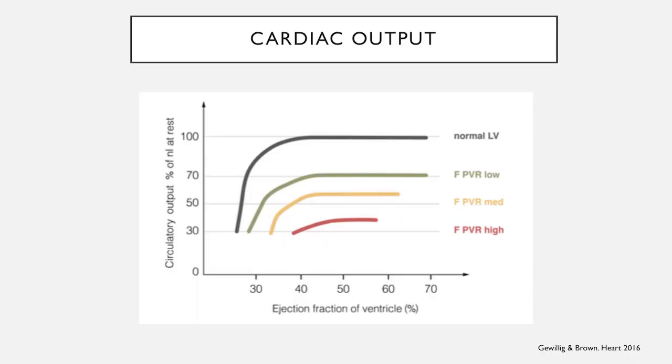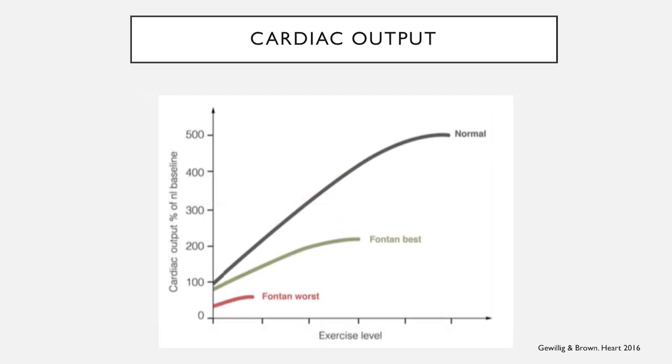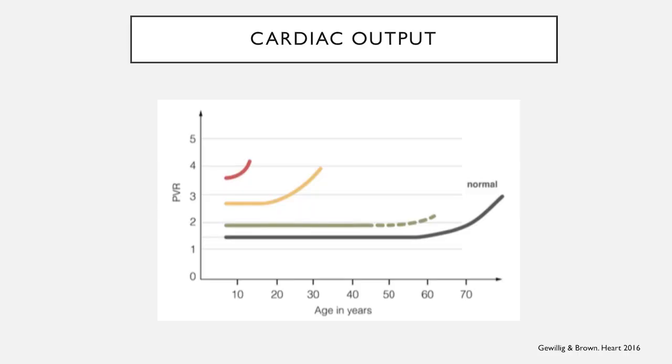PVR is clearly very important. There's a series of charts by Mark Gavillig showing what cardiac output at rest would look like for various degrees of ejection fractions, demonstrating how important PVR is in the Fontan circulation. A good Fontan may be able to improve their cardiac output by twofold during exercise, compared to a normal of five. The key theme in exceptional cases is a lifelong commitment to exercise. I saw two ladies in clinic last week with the same diagnosis — one whose mother was a personal trainer had a VO2 of 87% predicted and the other had 63%, simply because the mother insisted on keeping active.